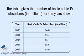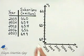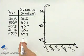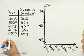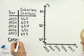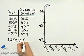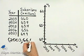The table gives the number of basic cable TV subscribers in millions for the years shown. For part A, we want to write this data as a set of ordered pairs of the form (year, number of basic cable TV subscribers in millions). It's basically done for us in this table. Our first ordered pair would look like this: the year 2003, and then subscribers in millions, so that's 66.0.